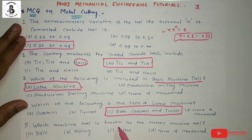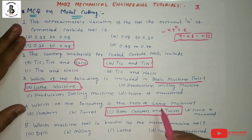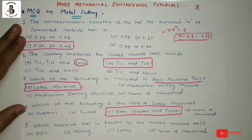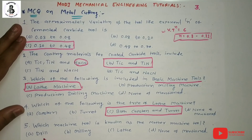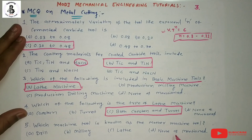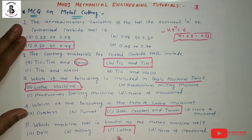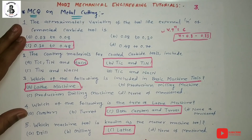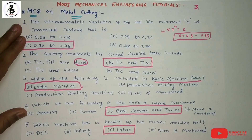Question 5: which machine tool is known as the mother of machine tools? As discussed in question 3, the basic machine tool is the lathe machine. Options: A) drill, B) milling, C) lathe, D) none of the above. The lathe machine is known as the mother of all machine tools — it is the basic machine tool you should find in any workshop, and you can make anything with it. So the answer is C.